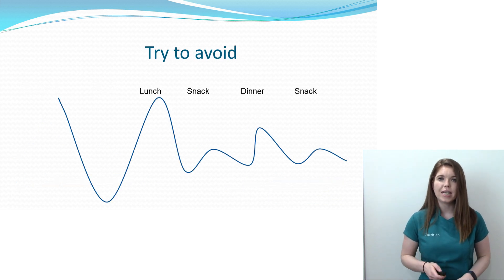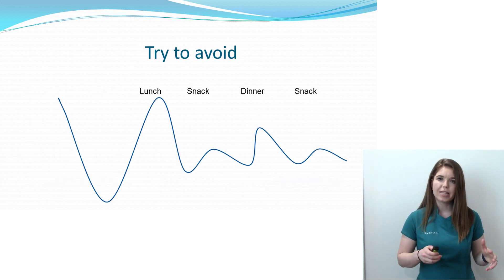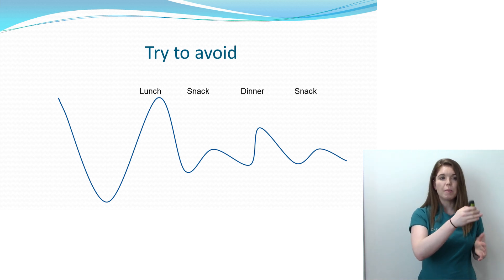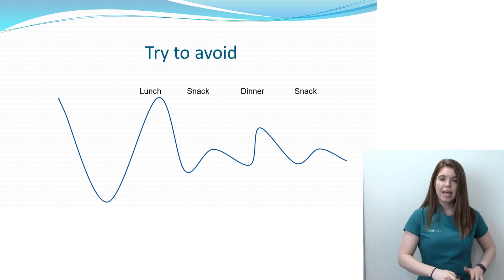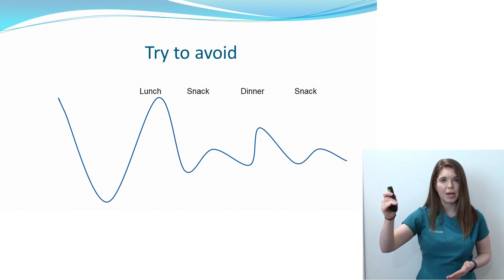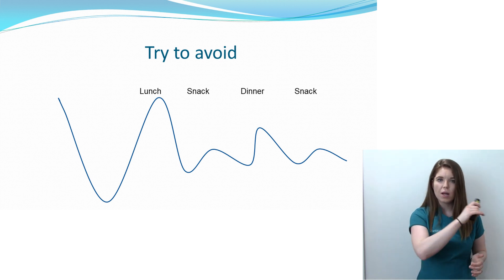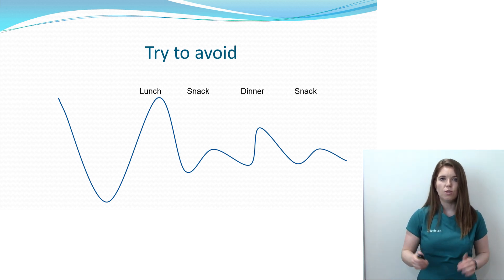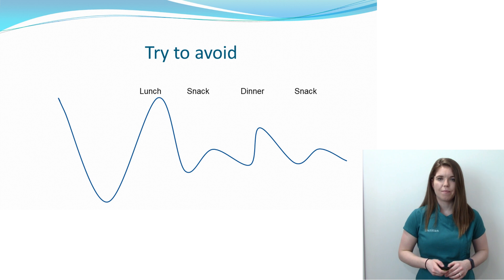What we want to avoid is something like this graph here. In this example, someone has skipped their breakfast, so their blood sugars have dipped. Then they get hungry and eat a large portion at lunchtime, which causes their blood sugars to spike up quite rapidly. We want those nice gradual peaks throughout the day that don't go too high or too low.